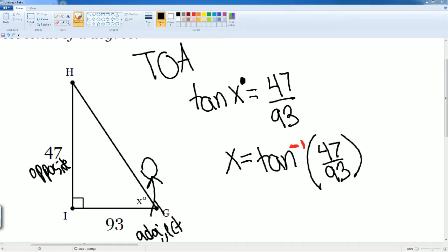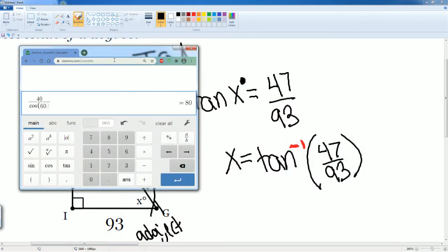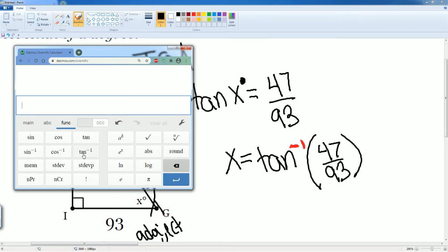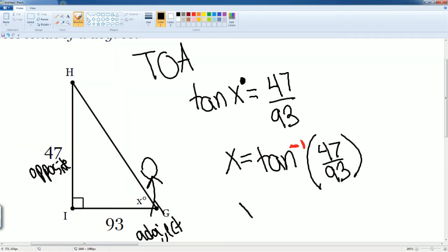You're going to be using decimals here and to access any of the inverses, you have to hit the function key. It's right here, tan to the negative one or tan inverse. So you write tan inverse. Now you type it in 47 divided by 93. Here you get the answer of 26.81. So you could round it to 26.8. So X here is 26.8.